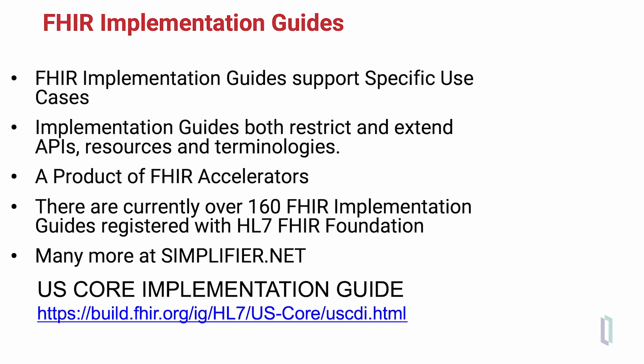As an example of the use of implementation guides to support government regulations requirements, the U.S. Core Implementation Guide is an implementation guide for some 29 different FHIR profiles that comply with U.S. regulations.